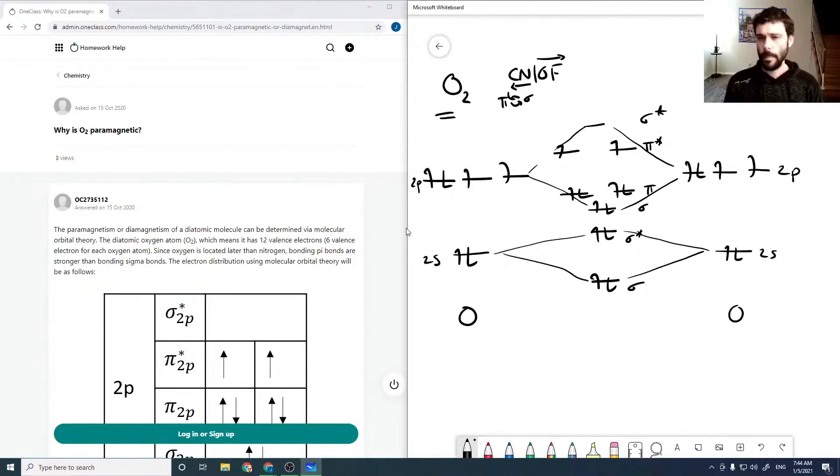Okay, and so our bond order for oxygen is our number of bonding minus our number of antibonding. And this isn't really relevant to the question, but I'm doing it anyway. So our bonding is 2, 4, 6, 8, and our antibonding is 2, 3, 4, and this is all over 2.